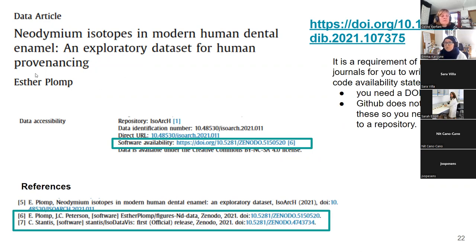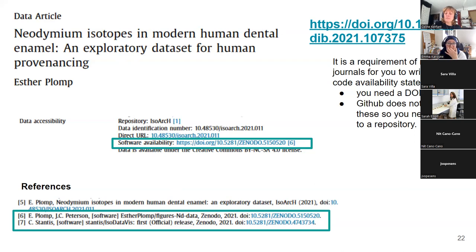My colleague Esther works on isotopes in human teeth. She's published her dataset from her PhD, and she has linked it — it says software availability but it's actually the data as well — and she's published it on Zenodo. People can cite her Zenodo archive, and she's shown that she's cited hers and other people's Zenodo archives. It's another form of publication: archiving data can be cited in your articles to link your work to your data, code, and methodology, and it can give you credit for your data and your code.